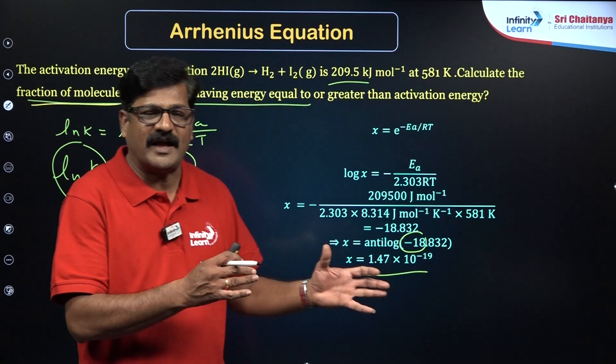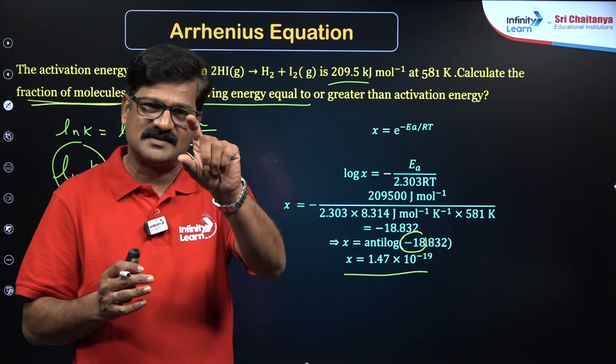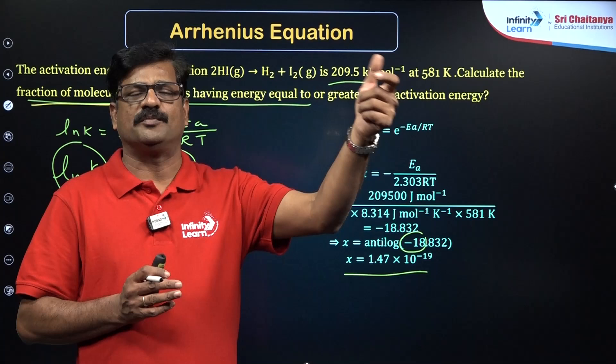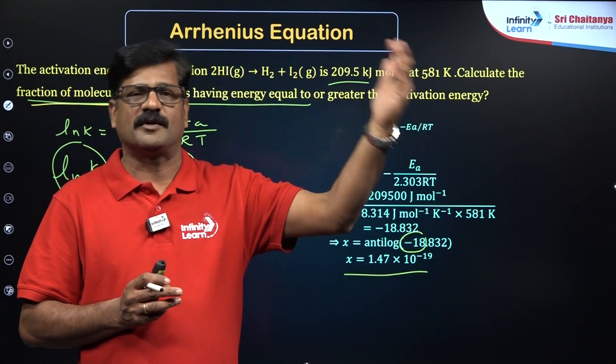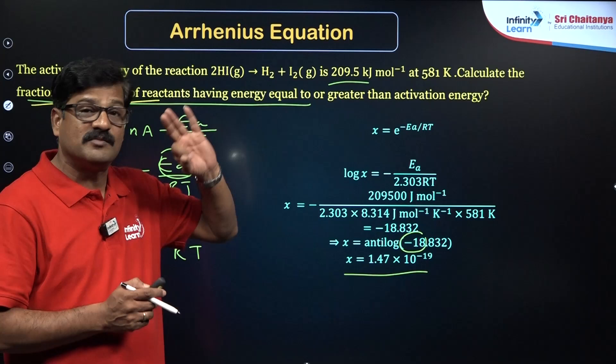You need not have to calculate this appropriately. You can just say it is antilog 10^(-18), right? So 10^(-19). So like that you are going to get three models of questions. I told you slope is given, activation energy is calculated. Another one T1, T2, k1, k2 relation is given in the previous slide. And this is the fraction of molecule.